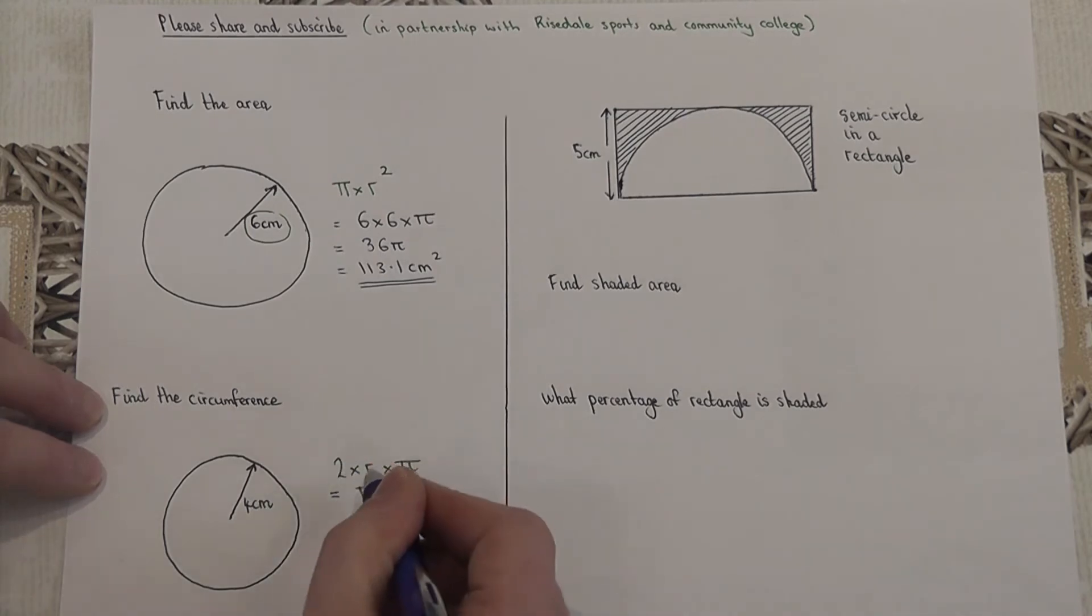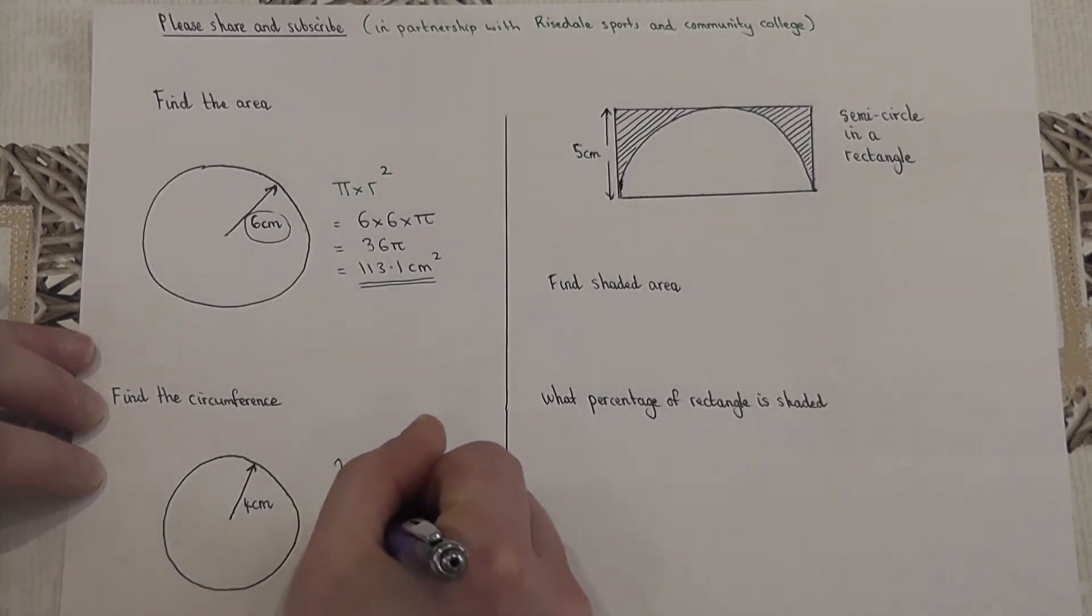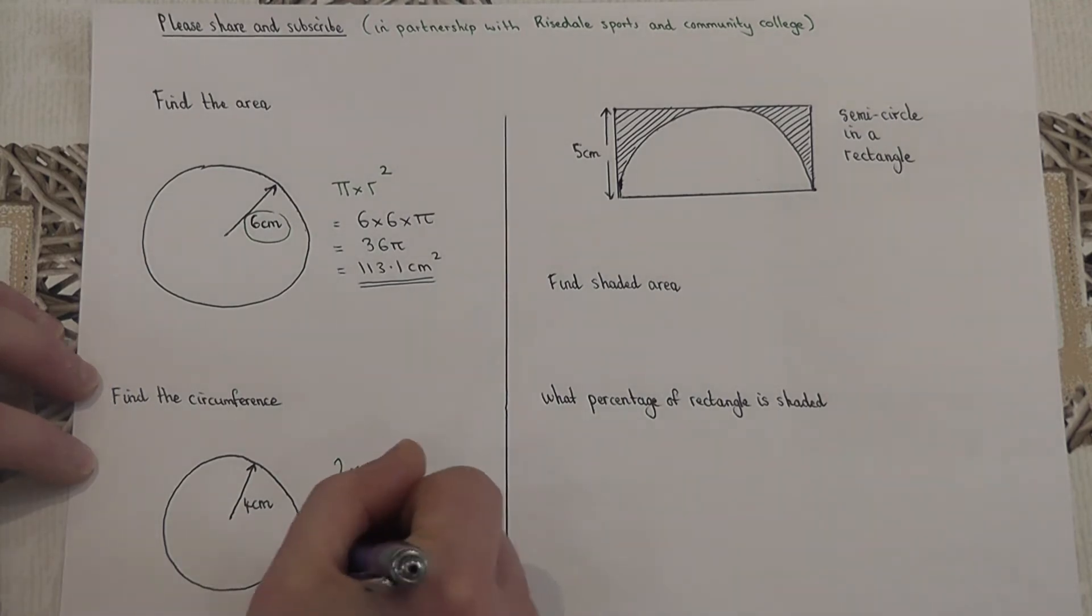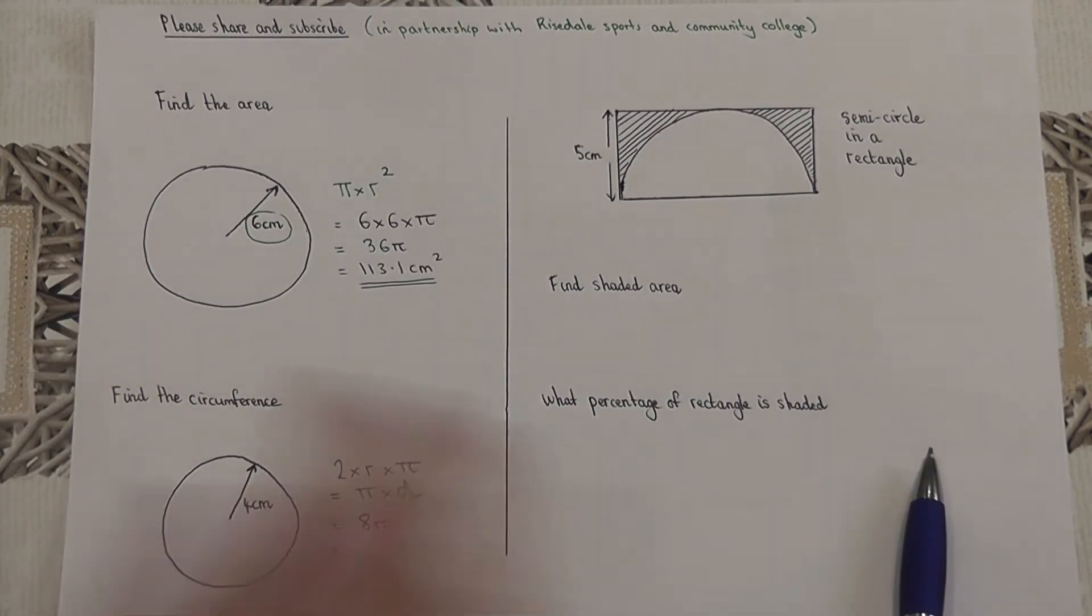Again, if the radius is 4, then 8 is the entire diameter across the circle. So 2 times the radius, 2 times 4 is 8. If I'm not going to calculate this, it will be 8 times by pi, and that's in terms of pi. However, we can work this out.